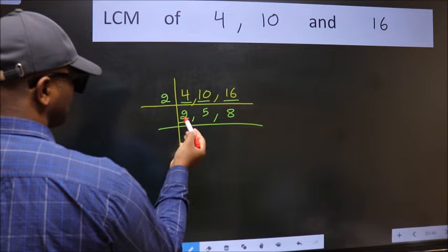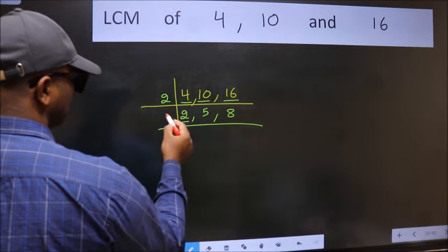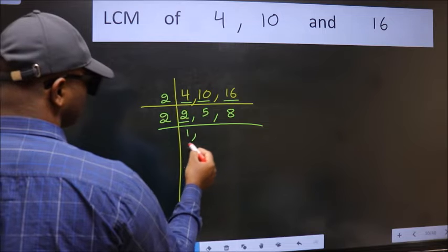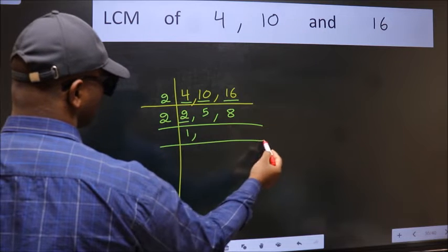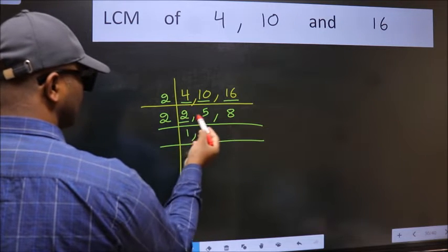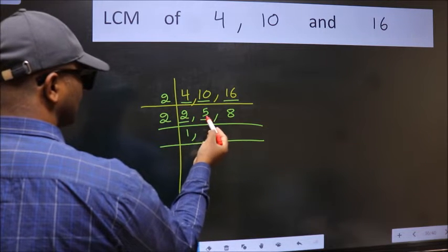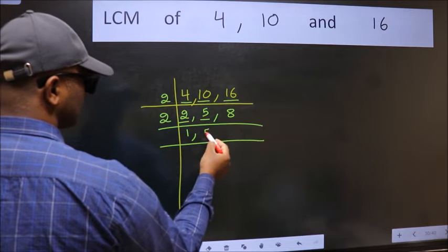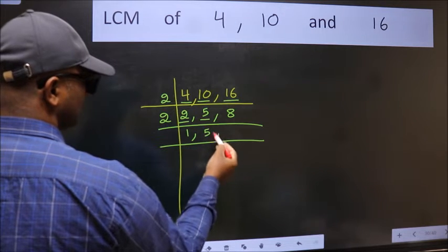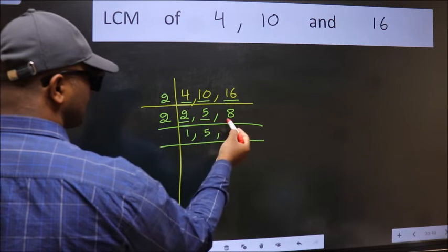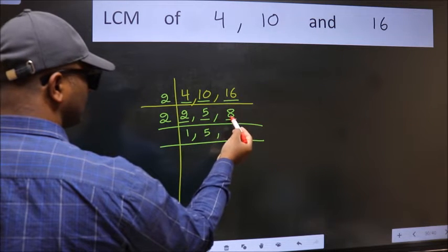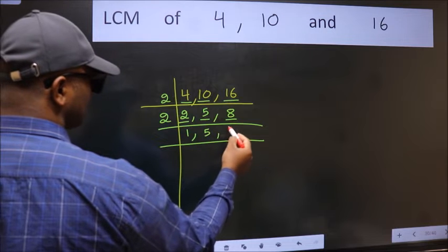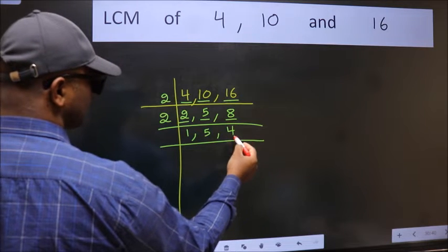Now here we have 2. 2 is a prime number, so 2 times 1 is 2. The other number 5 — not divisible by 2, so we write it down as it is. The other number 8 — when do we get 8 in the 2 table? 2 times 4 is 8.